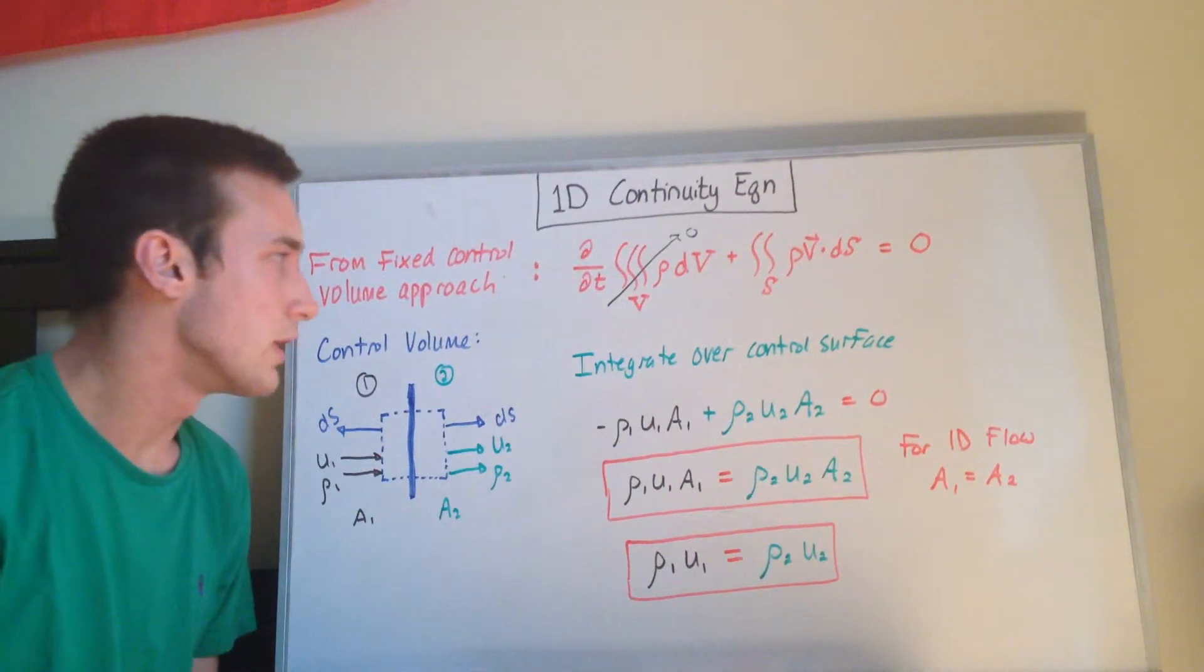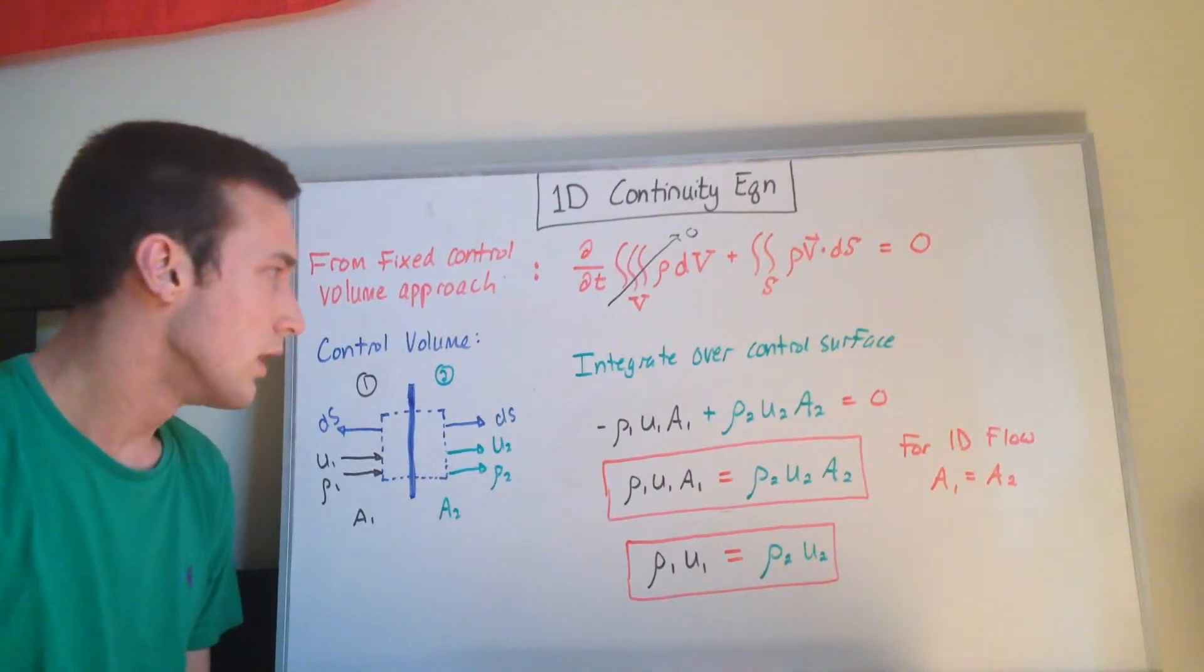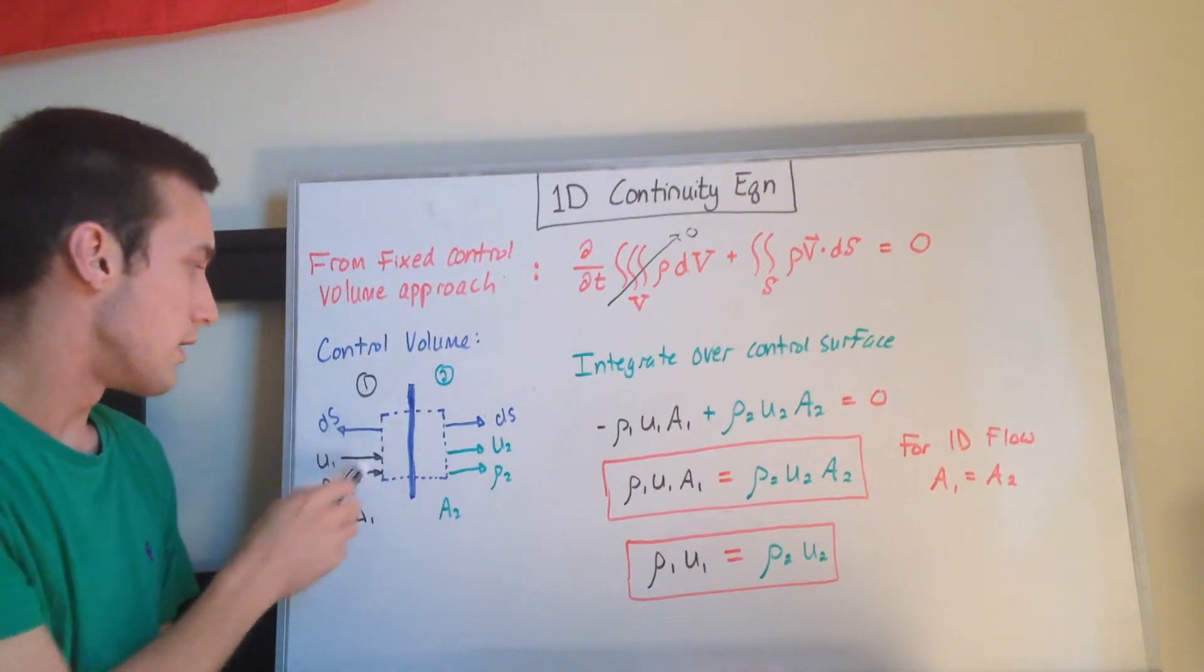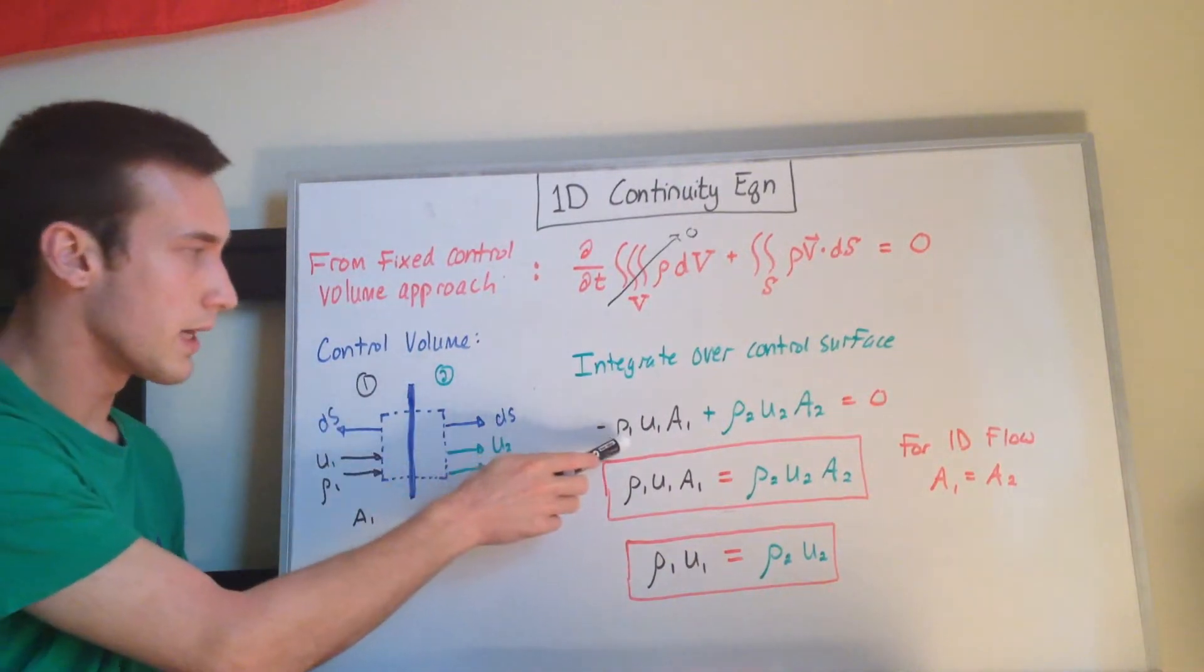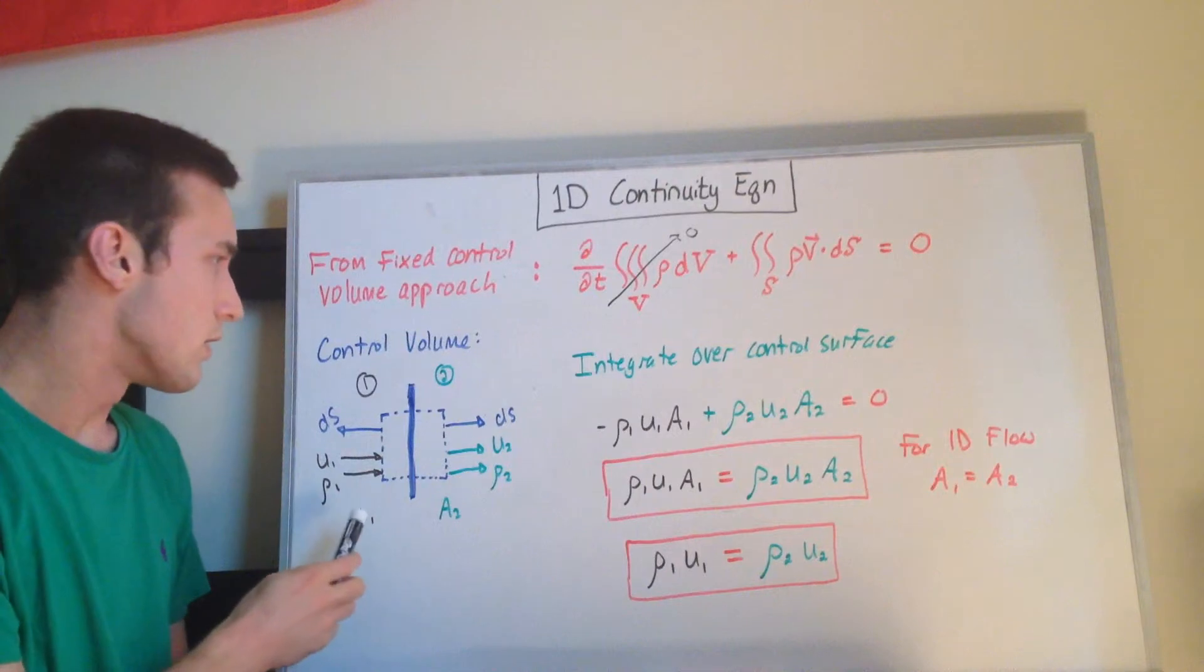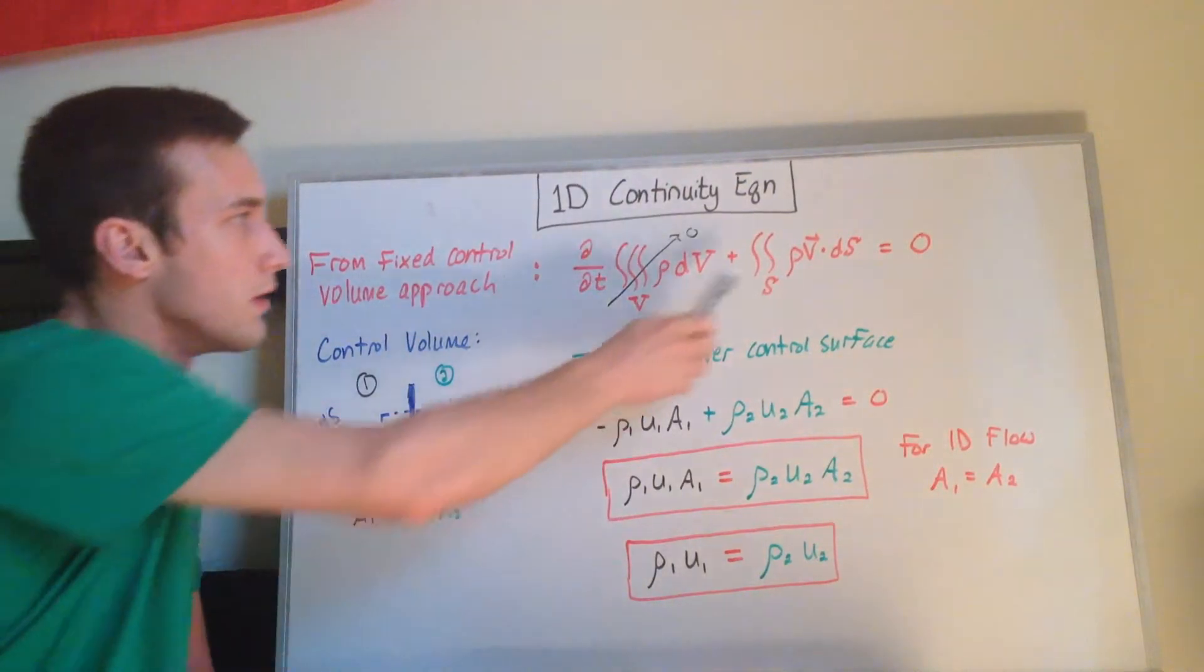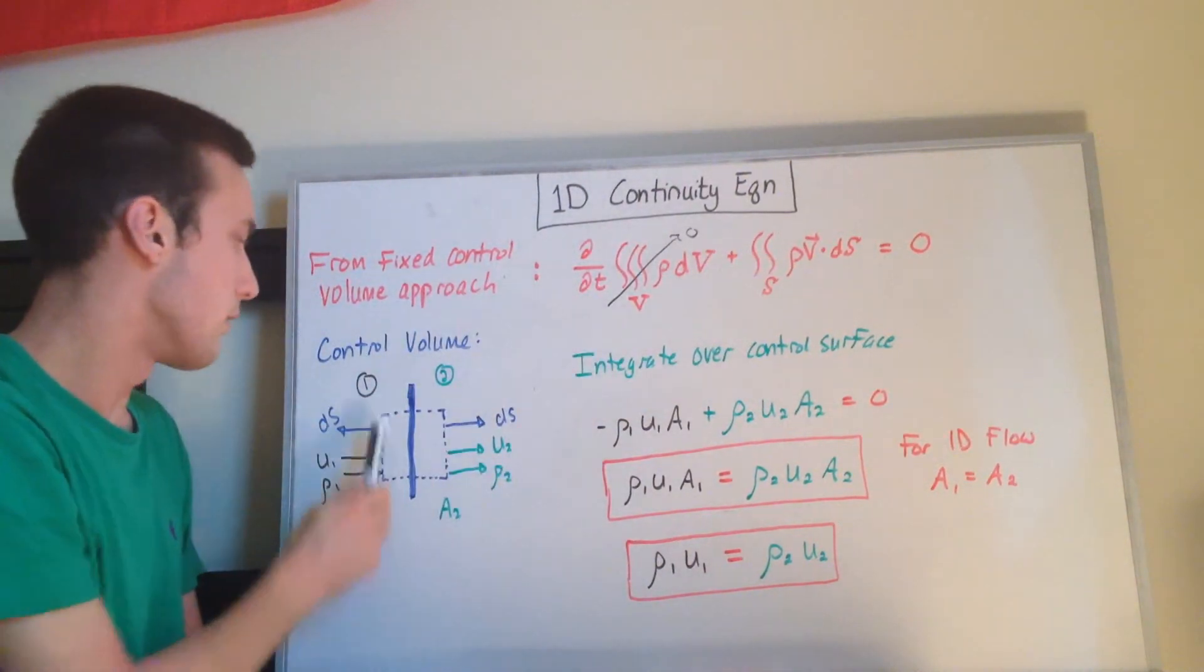Okay, so now what we want to do is we want to integrate over the control surface. So we'll start with the left side here. I'm drawing black here which corresponds to the black in the equation here. So if we integrate over this side, we want the density, so that's rho1 here,